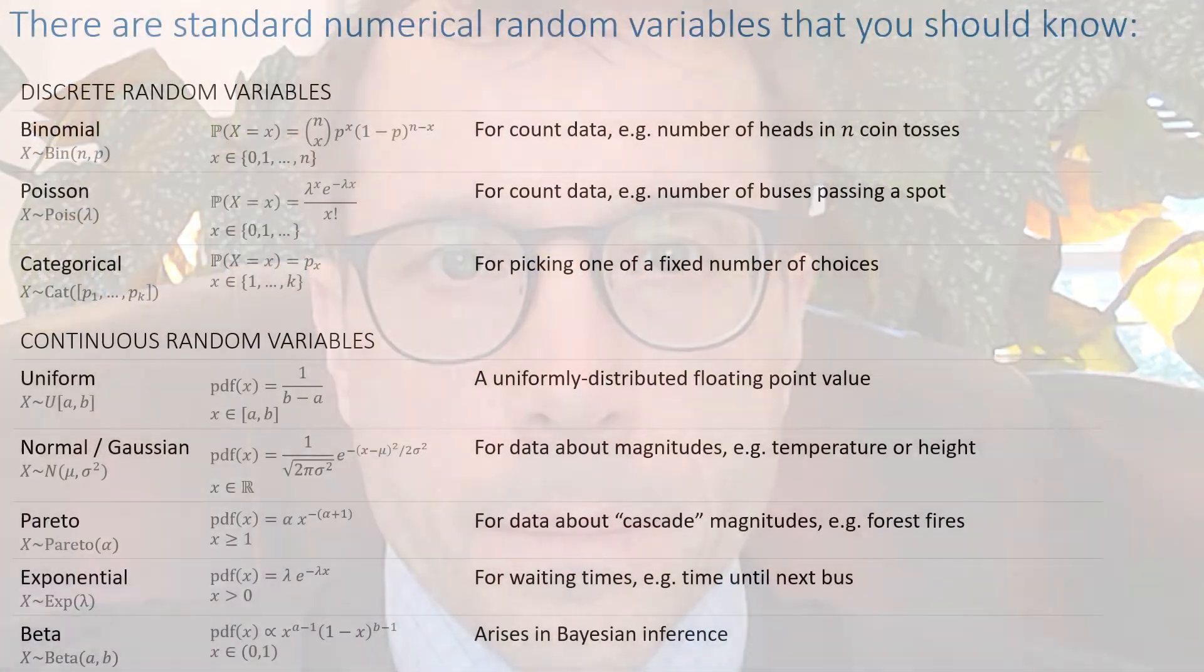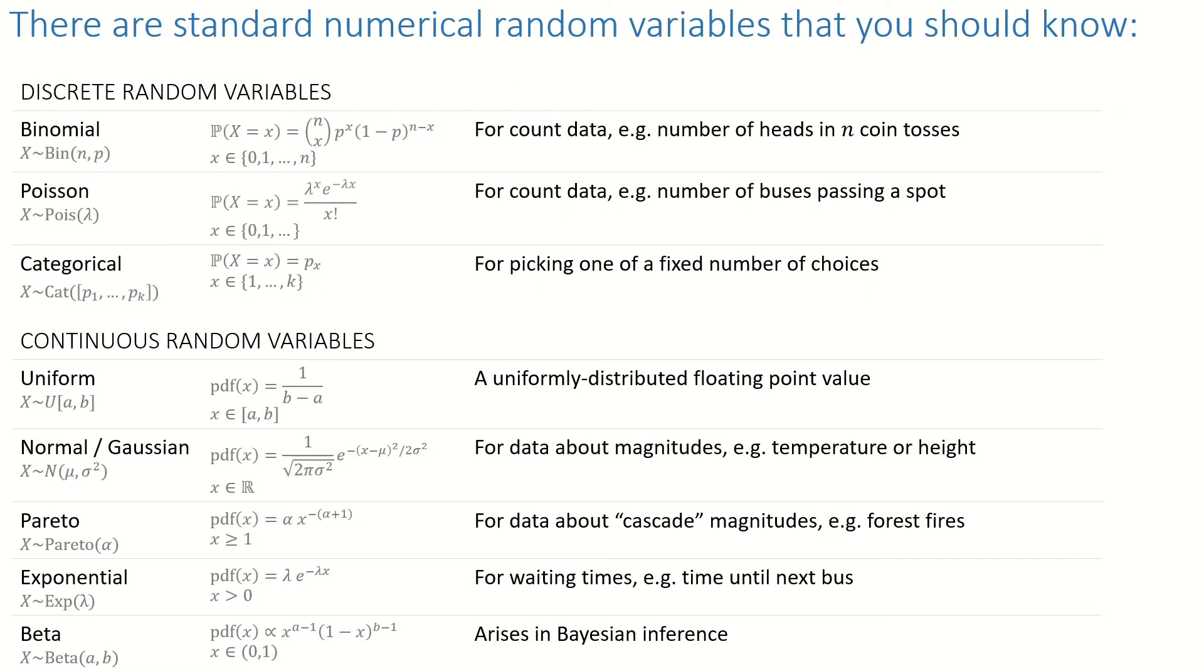We're working through the building blocks that we use to build probability models, and we have one more little piece to cover. There's a collection of standard random variables you need to know about. Here's a list of them.